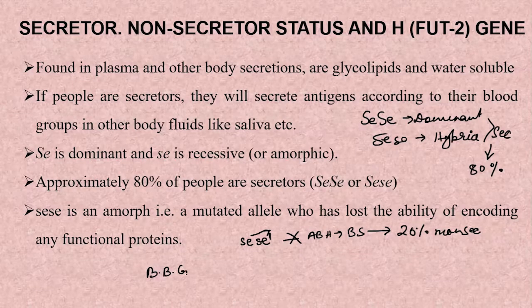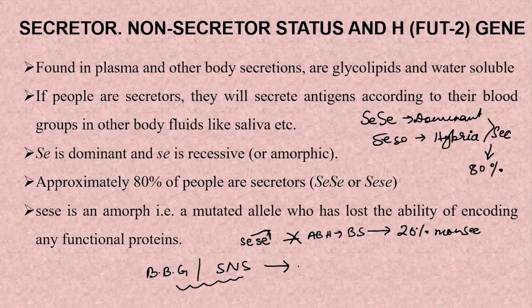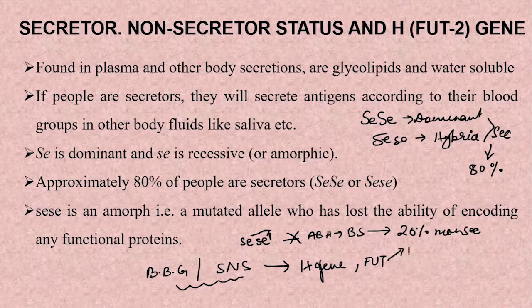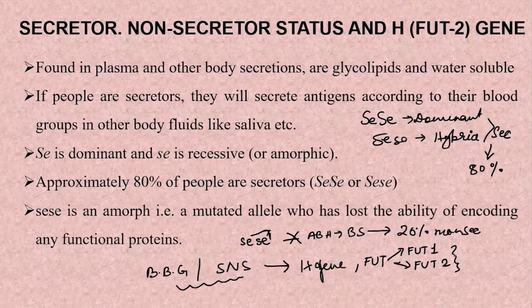So these two conditions — the Bombay blood group and the secretor/non-secretor condition — are the two important aspects associated with the H gene or the FUT gene, covering both FUT1 and FUT2 status. If you liked today's video, do comment, like, and share this video, and subscribe to our channel. Thank you for watching.